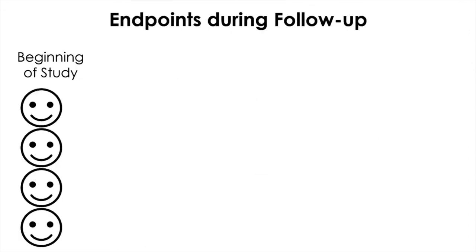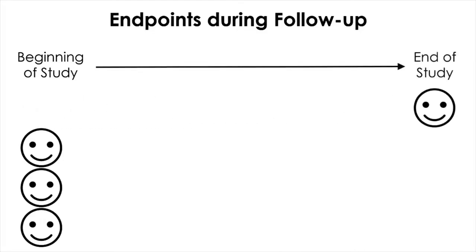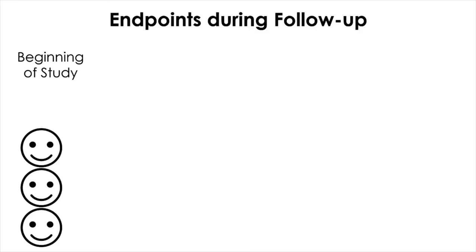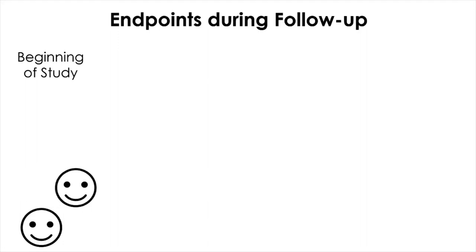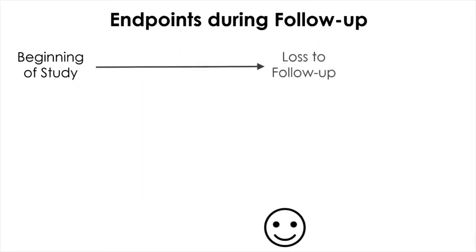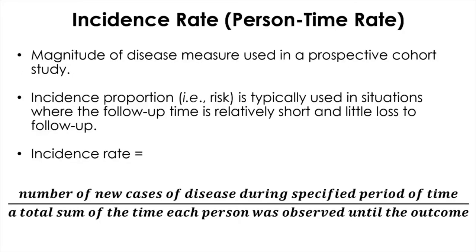In a long-term prospective cohort study, each member of the cohort is followed up until one of four endpoints. The first is the end of the study, at which point follow-up is stopped. The second is the onset of disease — when this person becomes a case. The third is when the member of the cohort dies. And finally, the fourth endpoint is being lost to follow-up. These are the four endpoints within which a person is followed during the study period.